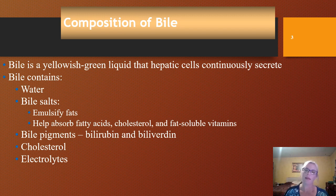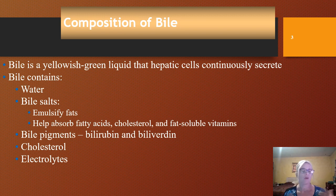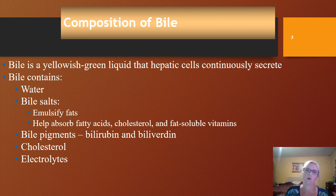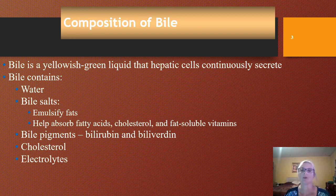We have bile pigments: bilirubin and biliverdin. We break bilirubin down in order to make it smaller so we can excrete it as biliverdin. When you're not able to do that, it creates problems, and we call that jaundice. Bilirubin is a byproduct of hemoglobin from red blood cells. Jaundice in infants is a problem because their mechanisms haven't fully formed, but when adults have this, it's a much greater problem.